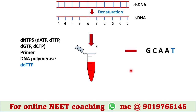In tube 2, ddTTP is used. That means it will be incorporated into the DNA when the complementary base is adenine in the template DNA. As the template DNA contains only one adenine, ddTTP could be added only once. Hence, we will get only one type of DNA fragment here.